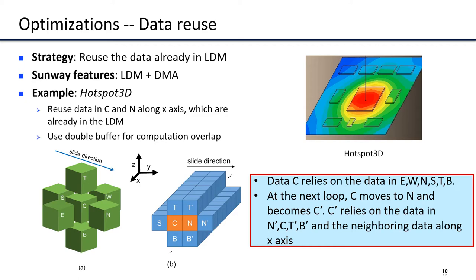The third optimization is data reuse, which reduces memory bandwidth usage, illustrated using HotSpot 3D. As shown in Figure A, the data at position C is related to its neighbors along the X, Y, and Z axis directions: E, W, N, S, T, and B. At the next loop iteration, as shown in Figure B, C moves to the position of N and becomes C-prime. The computation of C-prime depends on N-prime, C, T-prime, B-prime, and neighboring data along the X axis. We found that the data of N and C along the X axis are already in LDM, so we can reuse them directly instead of fetching those data from main memory again.